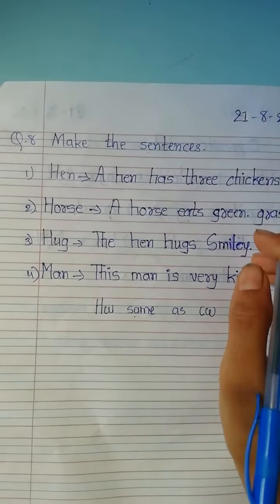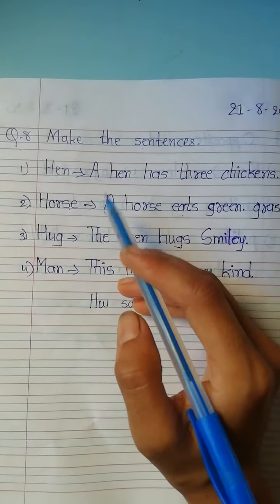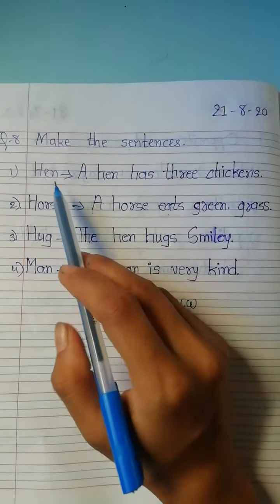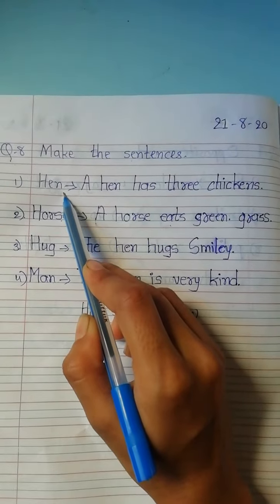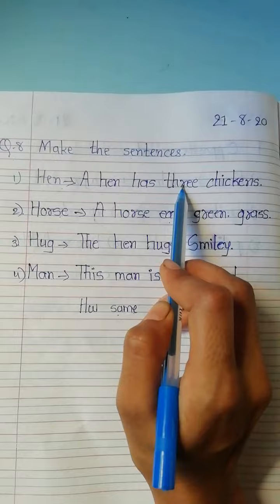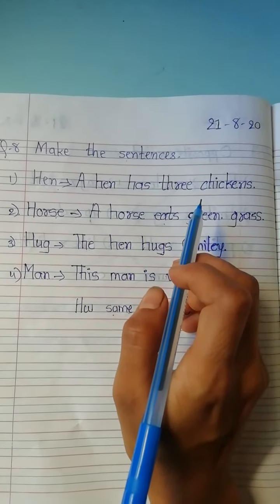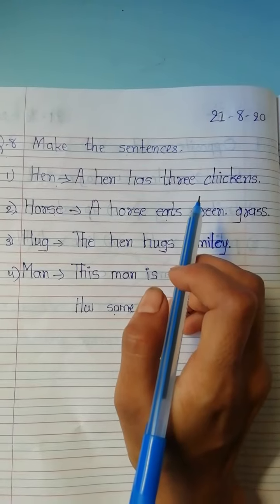Here below we give some names and we make sentences about these. So, first, hen. We make sentence about hen. A hen has three chickens. Then other one, a hen is domestic bird. Hen has two wings, etc.